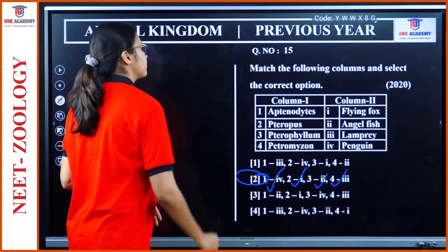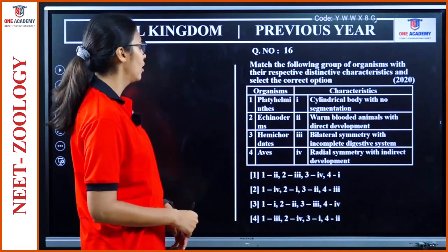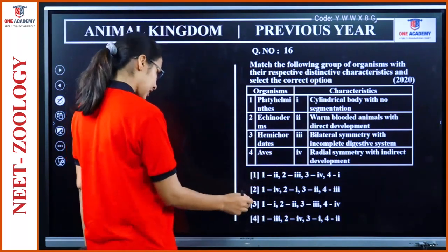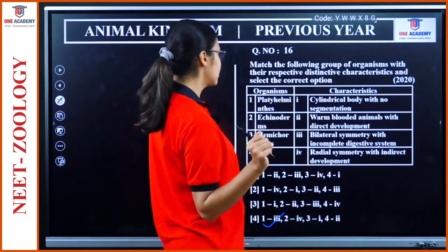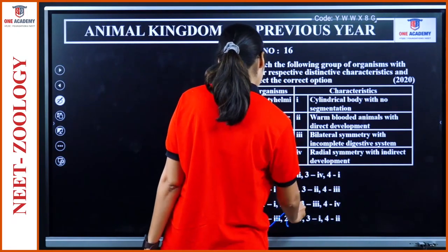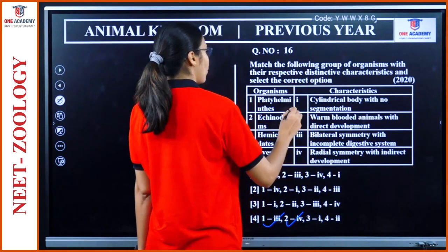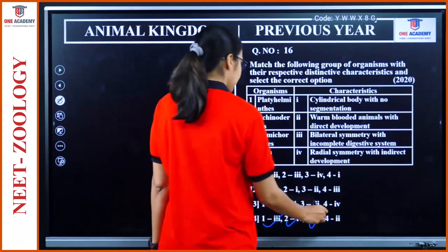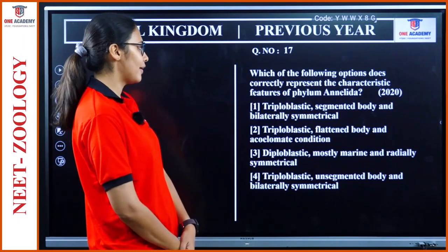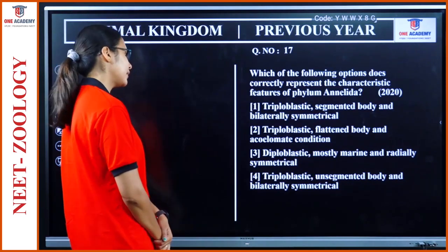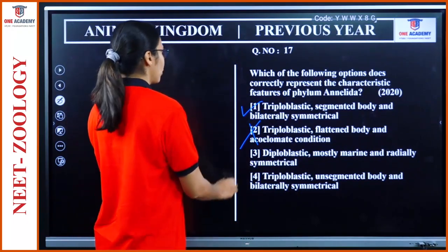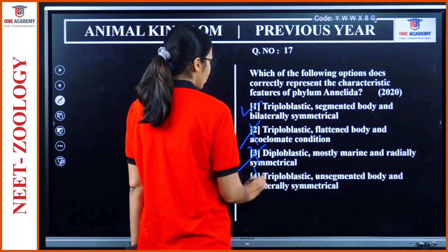Question 16: Match groups with characteristics. Platyhelminthes — bilateral symmetry with incomplete digestive system — 1-3. Echinoderms — radial symmetry with indirect development — 2-4. Hemichordata — cylindrical body with no segmentation — 3-1. Aves — warm-blooded animals — 4. Option 4 is the right answer. Question 17: Correct combination for Annelida — triploblastic, segmented body, bilaterally symmetrical. Triploblastic unsegmented is wrong — they are segmented. Option 1 is the right answer.